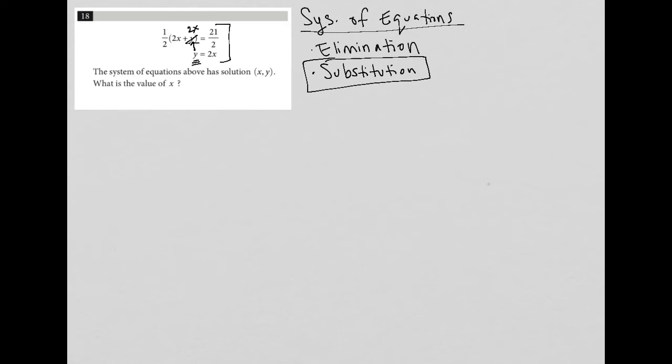So I'm going to write all of that down here so I have one half parentheses 2x plus 2x, so replace y with 2x there, equals 21 over 2.